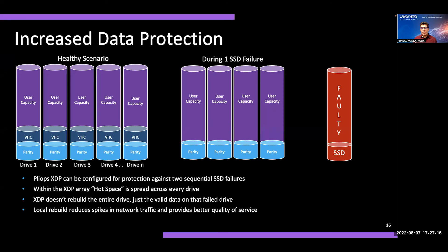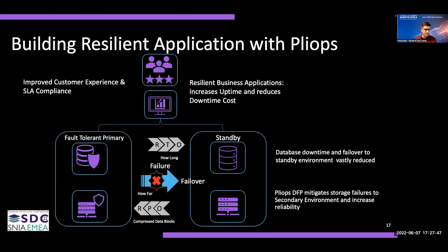PliOps drive fail protection provides increased data protection in two key ways: first, it can tolerate two sequential SSD failures so users experience no capacity drop or impact; and second, it accelerates rebuild and recovery operations faster because we rebuild only the used capacity, not the entire actual capacity, which helps accelerate recovery and rebuild operations.